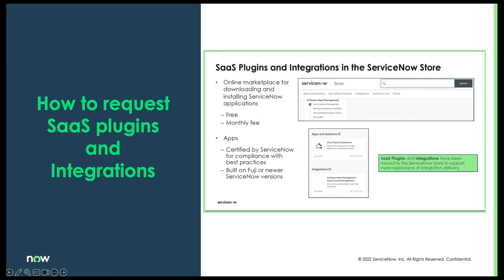If you want SaaS plugins or integrations, you will need to go to the ServiceNow store. You simply navigate to the ServiceNow store, type the plugin name into the search bar, pull it up, and go ahead and install it right from there.